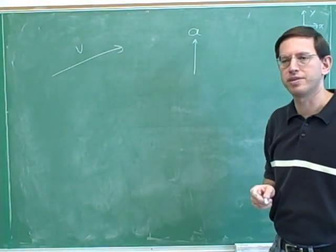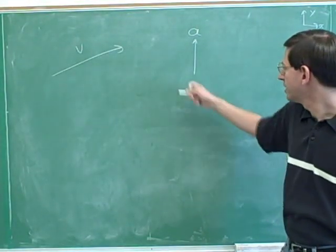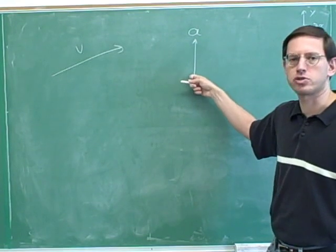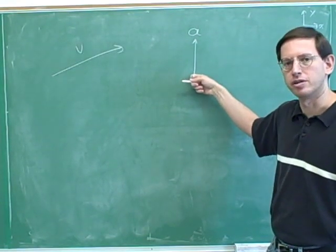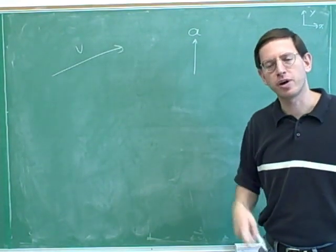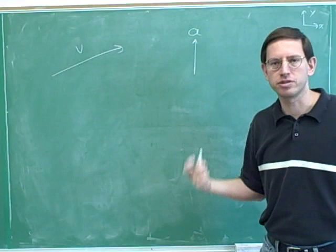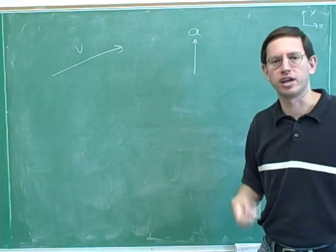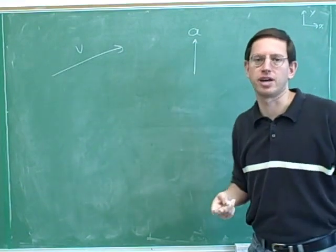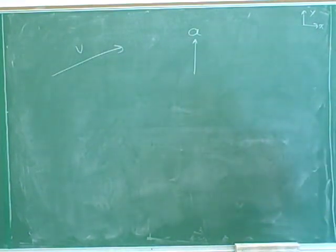Try to figure out everything you can about this object. This arrow is supposed to be pointing straight up — this arrow is pointing straight up. Try to pause the video and use the skills we've worked on to figure out as much as you can about this object.